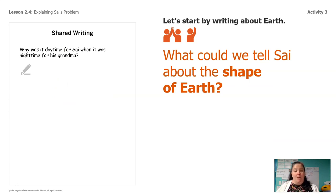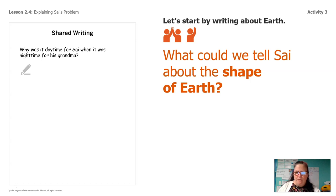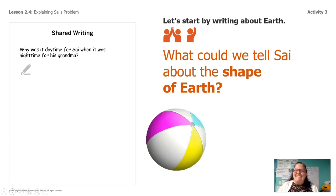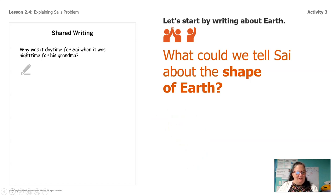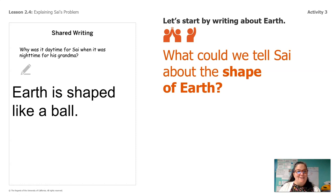I get to put my glasses on for this part because it's time for us to write to Psy about the reason why it was nighttime for his grandma when it was daytime for him. Let's write together — you guys tell me what to write and I'll write it down. What could we tell Psy about the shape of the earth? The earth is round like a ball. Let's write that: Earth is shaped like a ball.